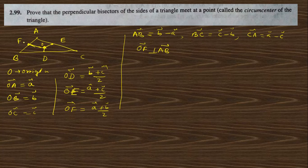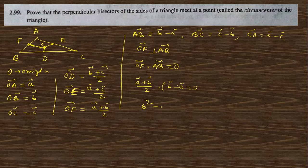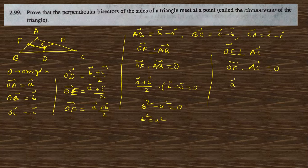Since OF is perpendicular to AB, OF dot AB = 0. Substituting: (a + b)/2 dot (b - a) = 0, which gives b² - a² = 0, so b² = a². Similarly, since OE is perpendicular to AC, OE dot AC = 0. Substituting: (a + c)/2 dot (c - a) = 0, giving c² - a² = 0, so a² = c².